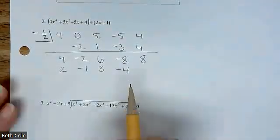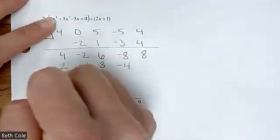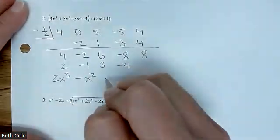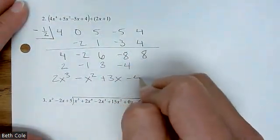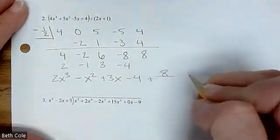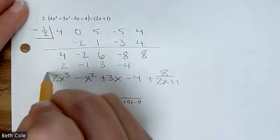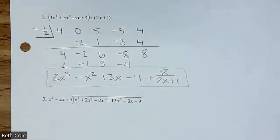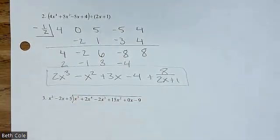Now I'm going to put the x's back in. We're going to start with one less than we had: 2x³ − x² + 3x − 4. Then tack the remainder on at the end — you're saying we were unable to divide that part out.